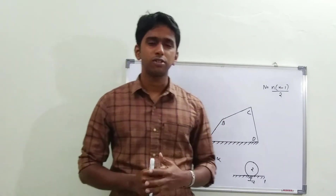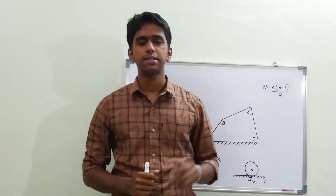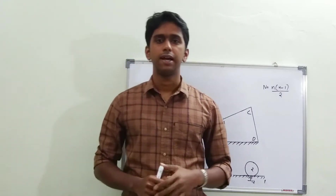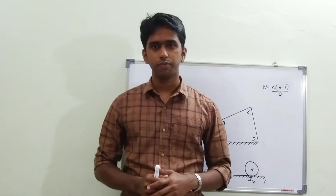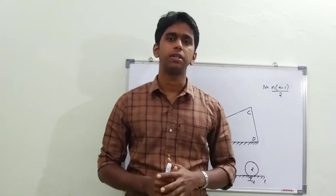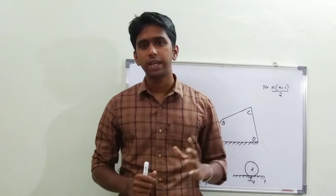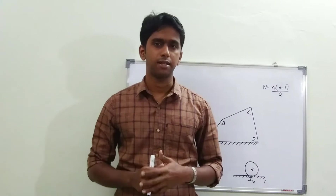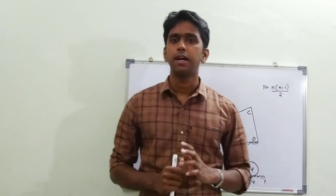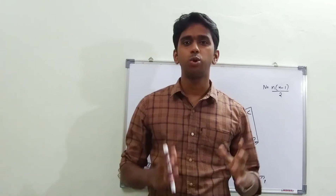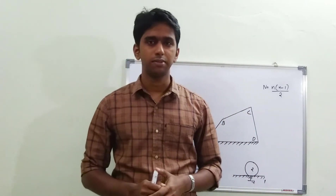We can do velocity analysis by means of two methods: one is the instantaneous center method and the second one is the relative velocity method. A major portion of the instantaneous center method is to locate the I-center itself. Today in this lecture I'm going to discuss how to locate instantaneous centers in a simple mechanism.